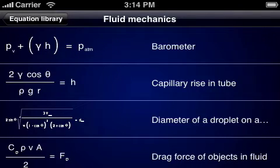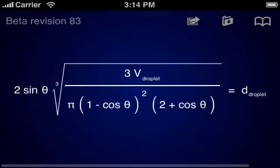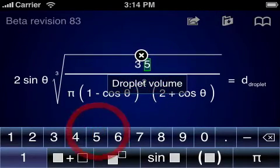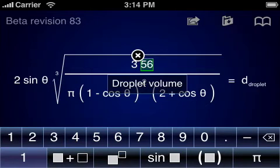Equations can be loaded from the list with a single tap. Variables can be assigned values simply by tapping on them and entering numbers. As you can see, a small text label appears below the variable to describe the function of that variable, a useful reminder of what you're specifying there.